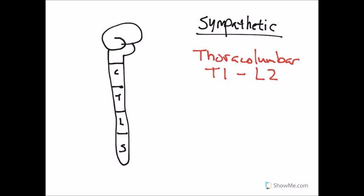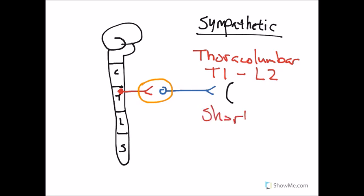Let's take one of our thoracolumbar pre-ganglionic fibers and bring it out. These fibers are relatively short as the ganglia are very close by — pre-ganglionics are short. The post-ganglionic fibers are considerably longer. There is one exception where sympathetic post-ganglionic fibers are not long, and that is the suprarenal medulla, which we'll look at briefly later. So sympathetic has short pre-ganglionic neurons and long post-ganglionic neurons — that's important to remember.